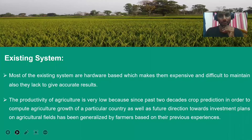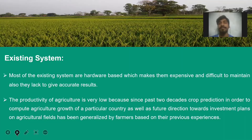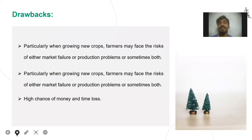Most of the existing systems and hardware are expensive and lack accurate results. The productivity of agriculture is very low because, over the past few decades, crop production depended on the farmer's previous experiences. The drawbacks of the existing system are: particularly when growing new crops, farmers may face the risk of market failure or production problems. There is a high chance of money and time loss in the existing system.